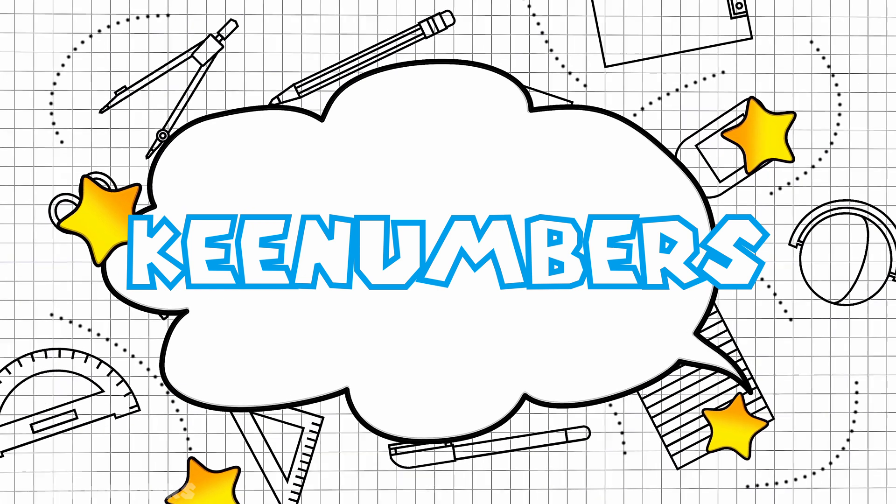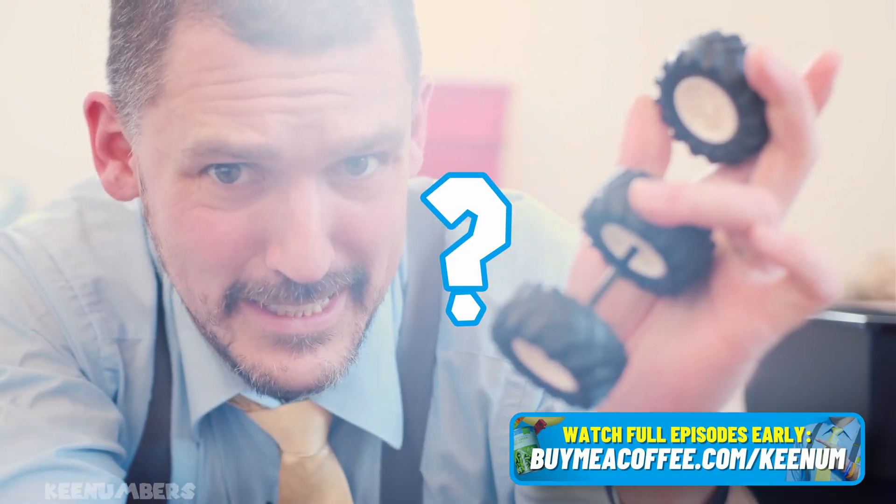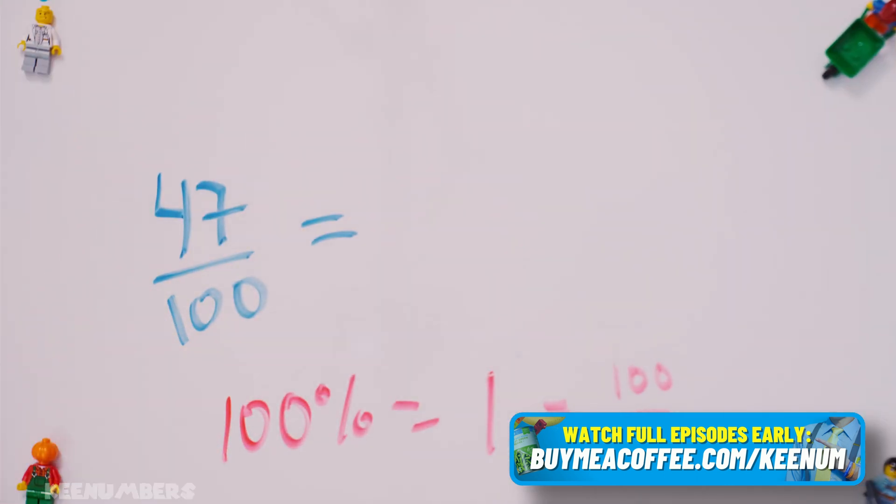We know... But what happens when you have a fraction? 47 out of 100. Now, a hundred one-hundredths.